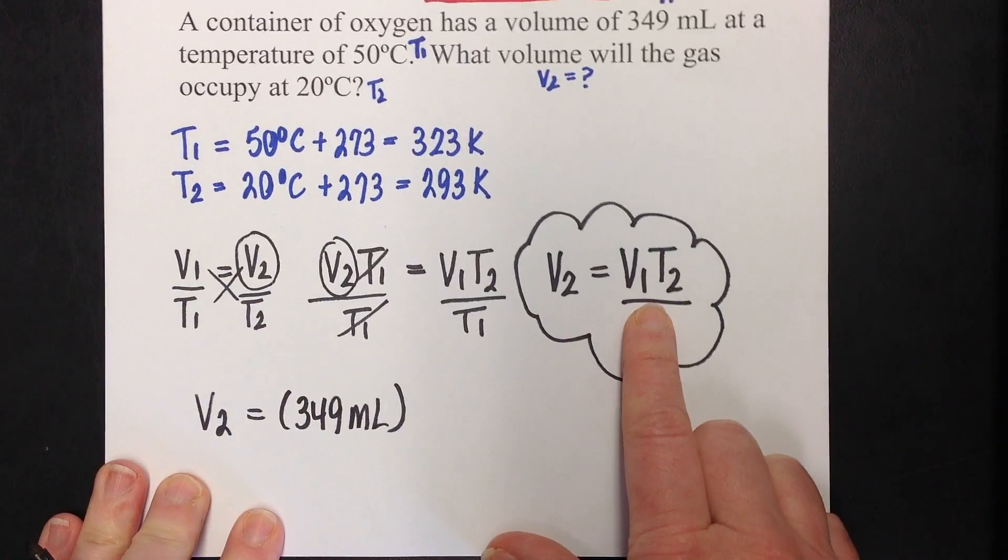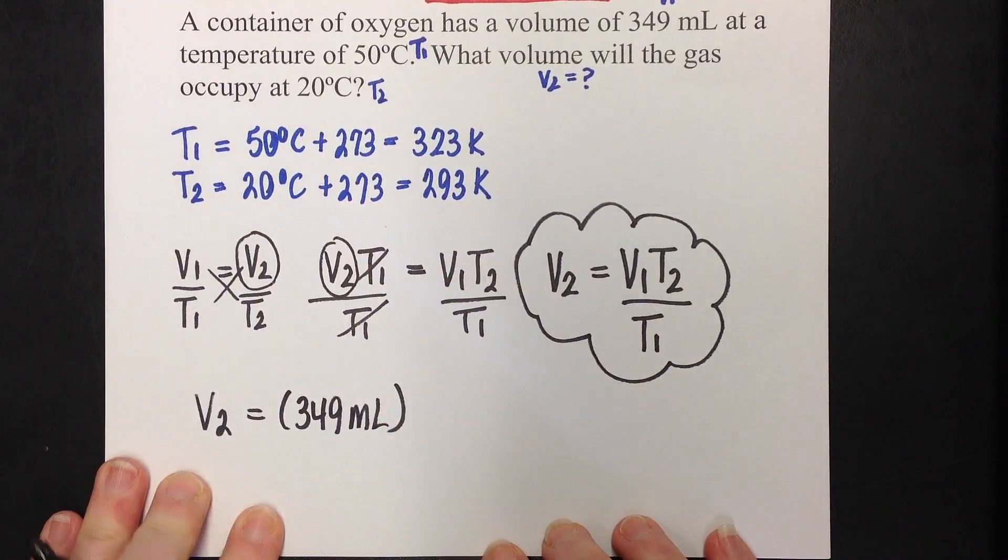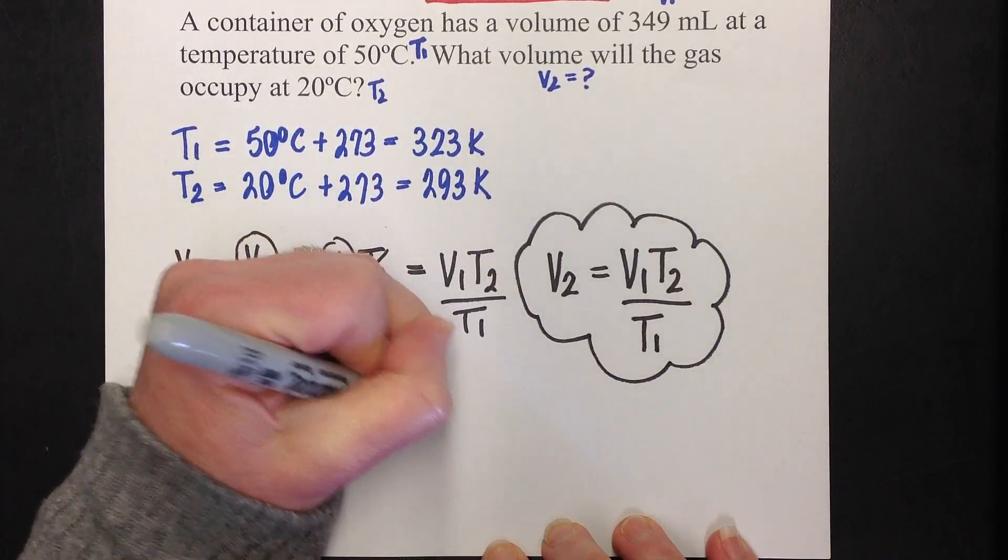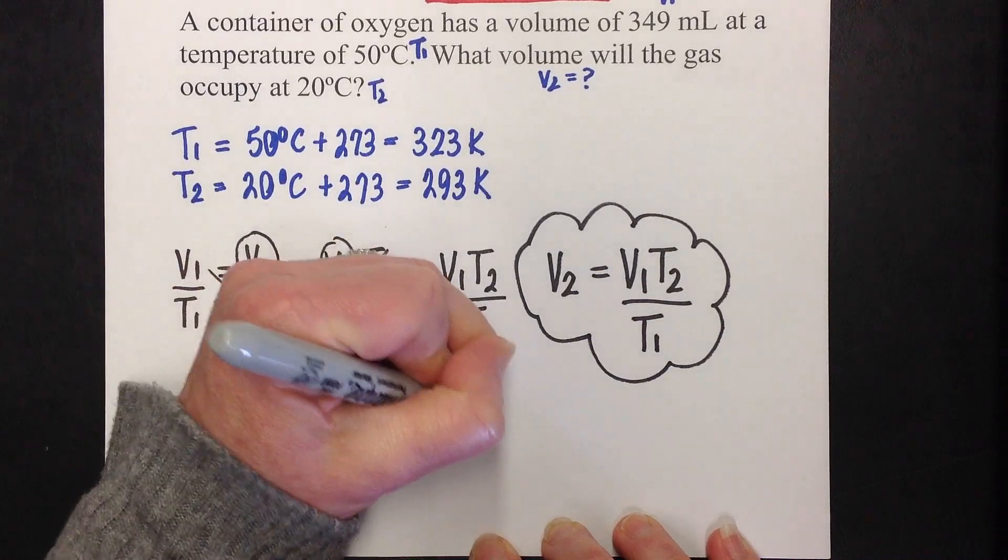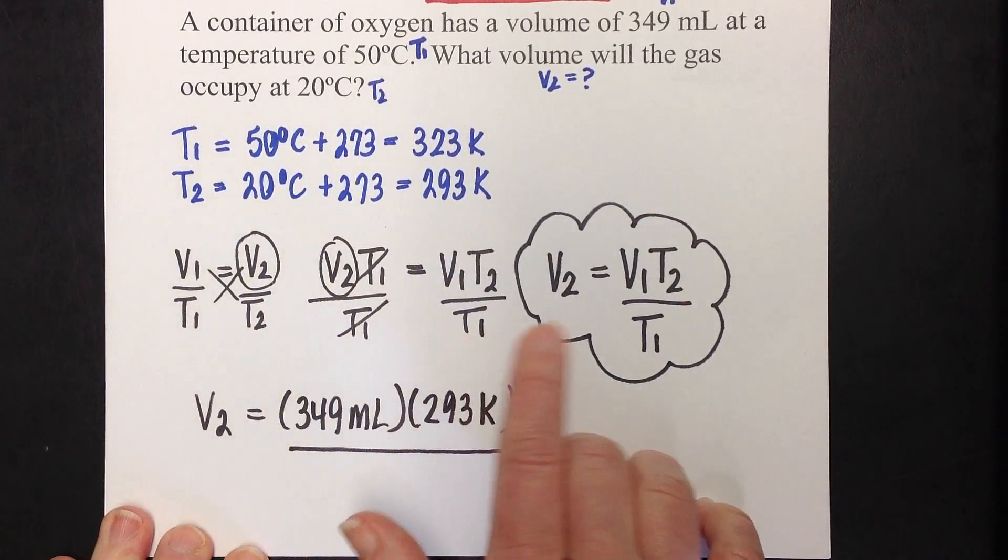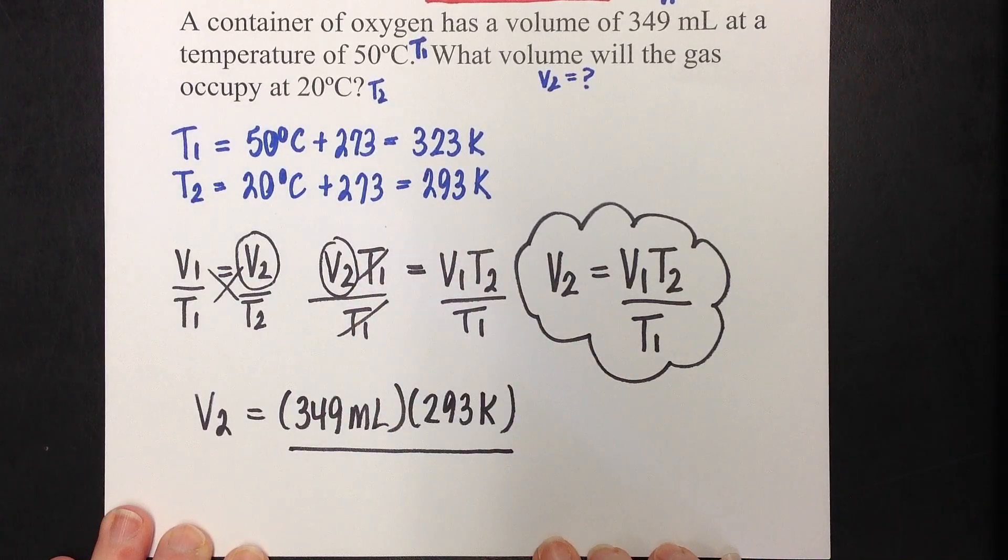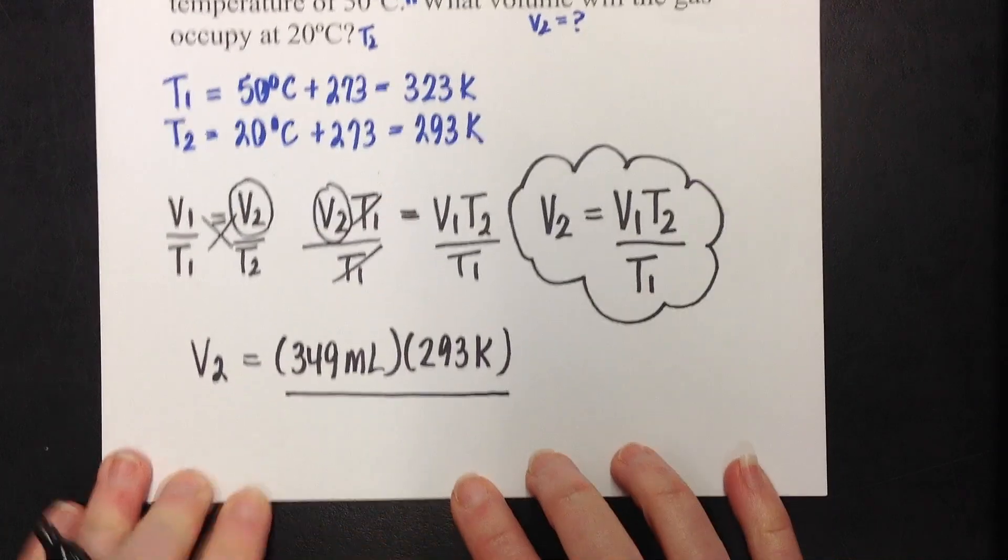Now, be careful there, because our T2 was 293 Kelvin divided by T1, which was 200 and, I'm sorry, 323 Kelvin.